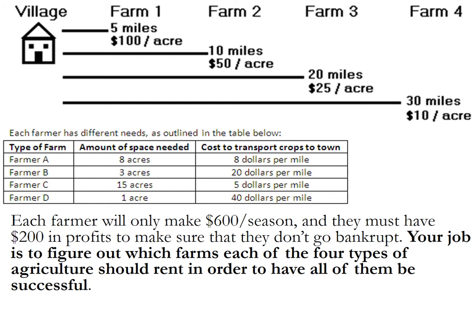So to start Von Thunen and even talk about it, doing a math problem is probably the best way of understanding the concept without being told the concept. We all know that different types of agriculture need different amounts of space, and some things are easier to transport than others. Things that are more difficult to transport are obviously going to be more expensive. So what Von Thunen came up with is that farms that don't need as much land and have expensive things to transport should be closer to the village, versus things that need a lot of land and are very cheap to transport — they should be the furthest away.